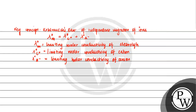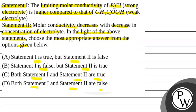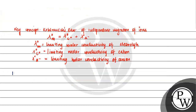That's Kohlrausch's law of independent migration of ions. For our question, we have KCl and CH3COOH. The ions are: K⁺, Cl⁻, H⁺, and CH3COO⁻. Their limiting molar conductivity values in S·cm² per mole are: H⁺ = 349.8, K⁺ = 73.5, Cl⁻ = 76.3, and CH3COO⁻ = 40.9.